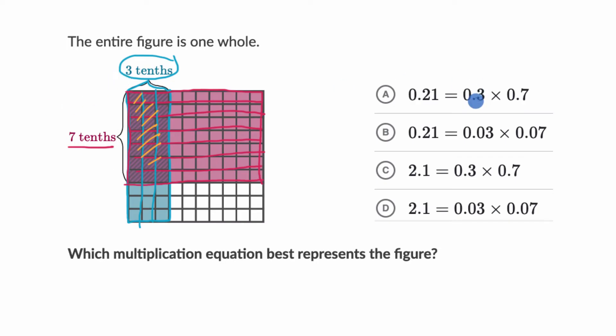So we immediately know it's going to be either this choice that has three-tenths times seven-tenths, or this choice that has three-tenths times seven-tenths. But let's see what this should be.